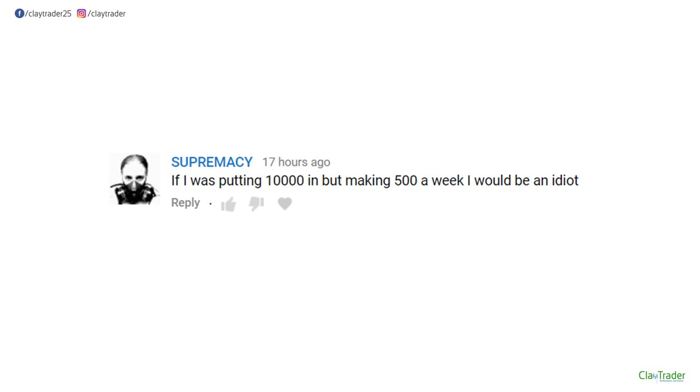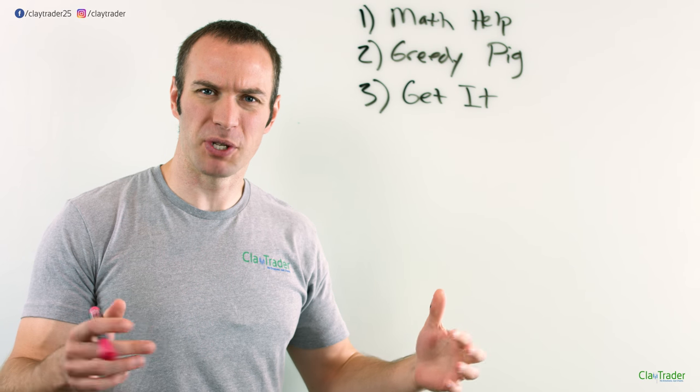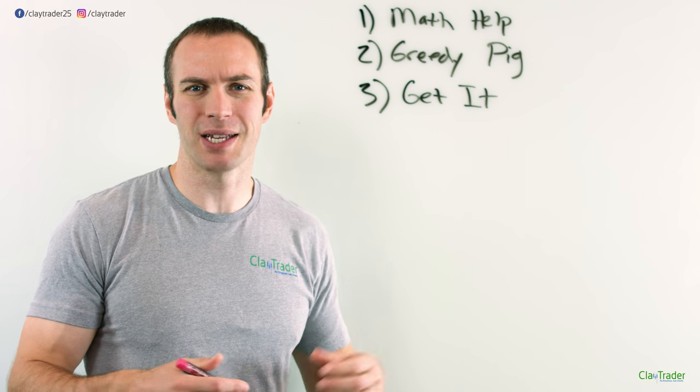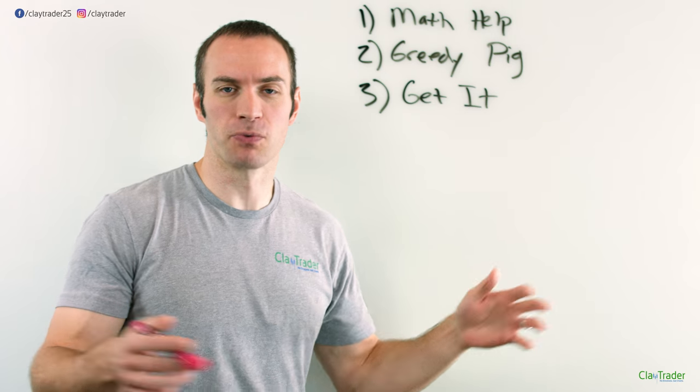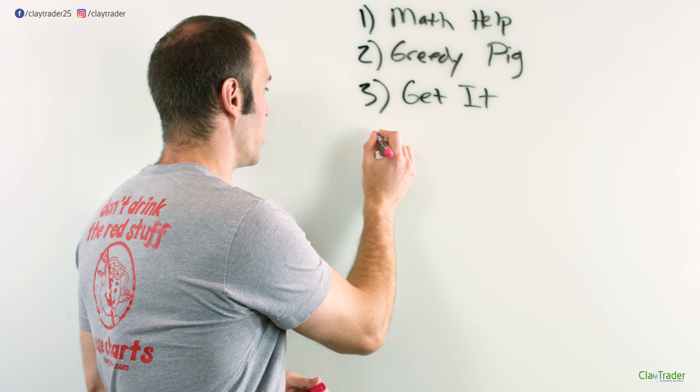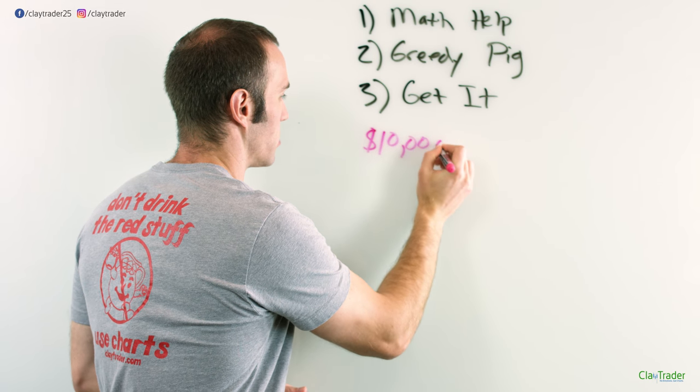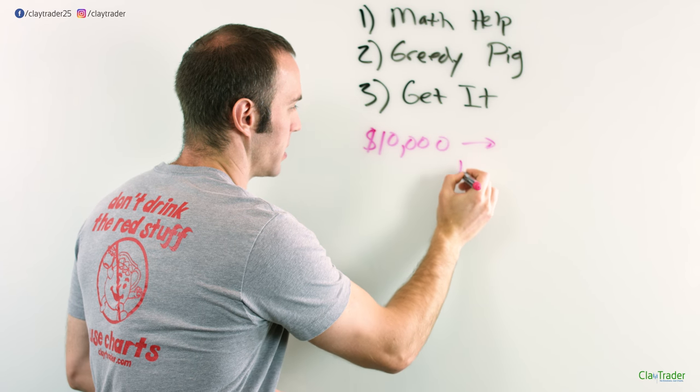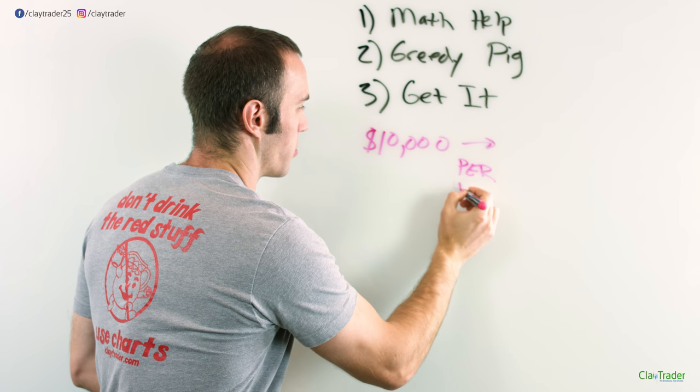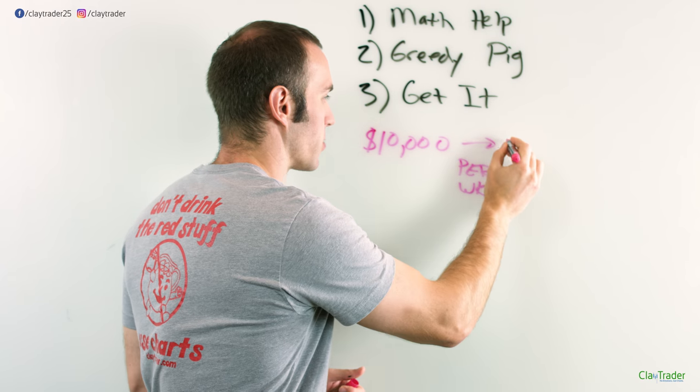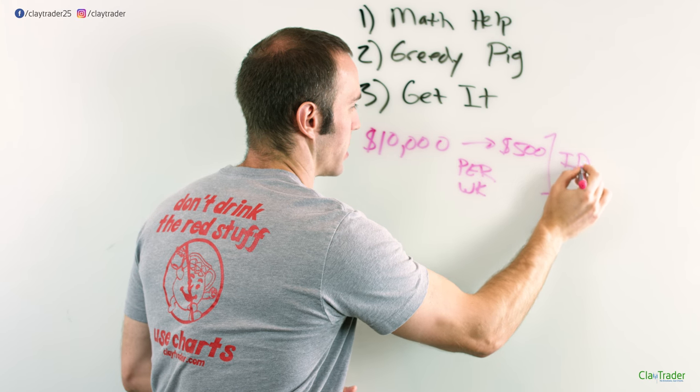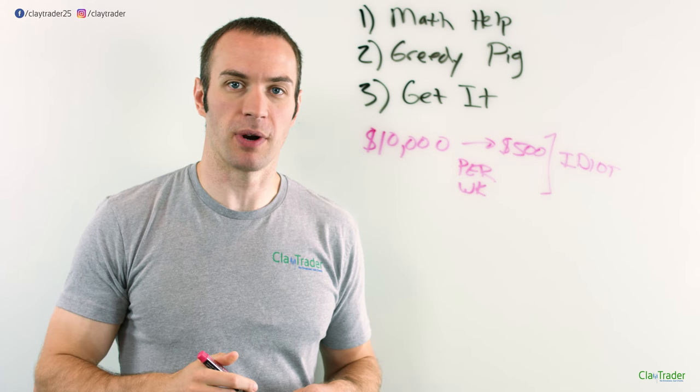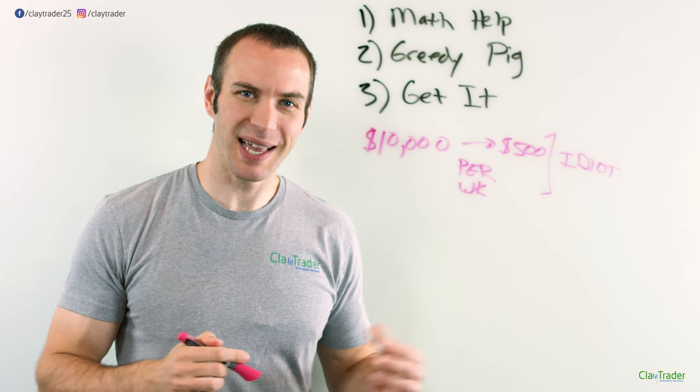If I was putting $10,000 in but making $500 a week, I would be an idiot. I'm not quite sure if that was supposed to be an insult at me or just a comment in general. I don't remember what video that came from. Maybe it was an intended insult, but regardless, what is this person saying? If I had $10,000 per week and I made $500, this all would mean idiot. That is what they're summarizing. But let's actually do a little math here.